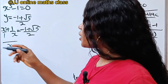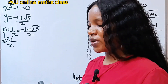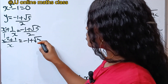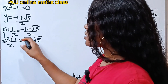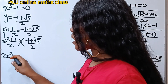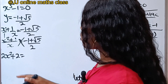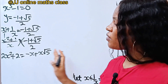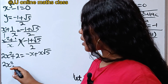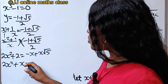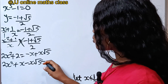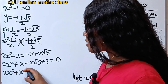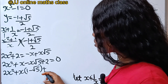So we have x squared plus 1 over x equals minus 1 plus root 5 over 2. Cross-multiplying: 2 times x squared plus 1 equals x times minus 1 plus root 5. Bringing everything to one side: 2x squared plus x times 1 minus root 5 plus 2 equals 0. Here a equals 2, b equals 1 minus root 5, and c equals 2.